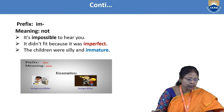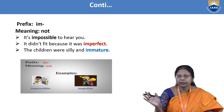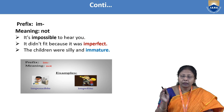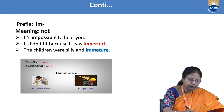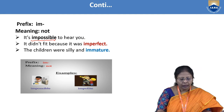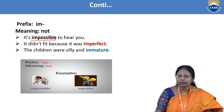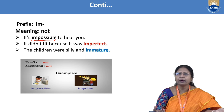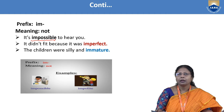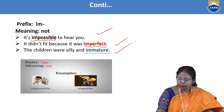The next prefix is 'im,' which means 'not.' 'Imperfect' means not perfect. 'Immature' means not mature. 'Impossible' means not possible. For example: 'It is impossible to hear you — there is a strong wall between us.' 'It didn't fit because it was imperfect.' 'The children were silly and immature.' In this way, the prefix 'im' adds meaning to the root word.